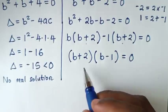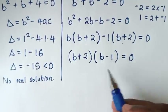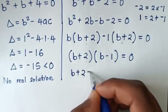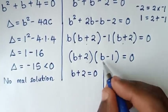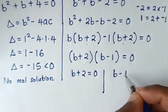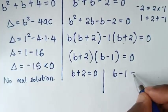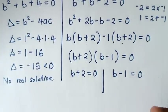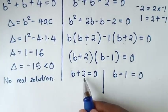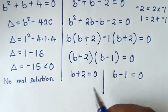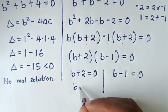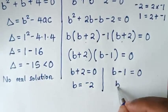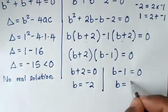Then from here we have two solutions: b+2 = 0 giving b = -2, and b-1 = 0 giving b = 1.